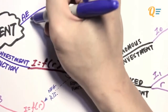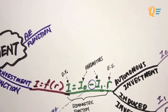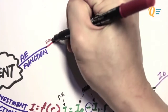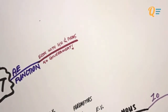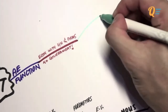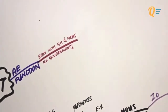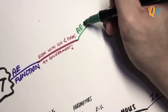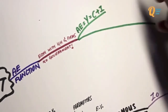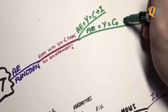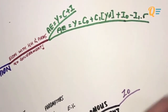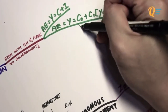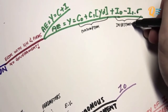Now that you understand investment, let's put investment together with consumption. We're going to look at the AE function, assuming we are in an economy with only two entities: households and firms, with no government. The aggregate expenditure is: AE equals Y equals consumption plus investment. Expanding this function gives us: C0 plus C1 multiplied by the level of disposable income, plus I0 minus I1 times R. The first portion refers to the consumption function, and the second is the investment function.